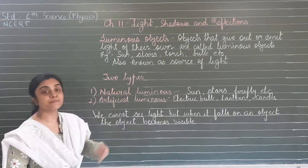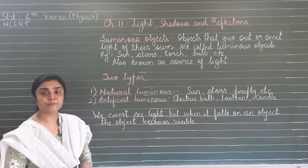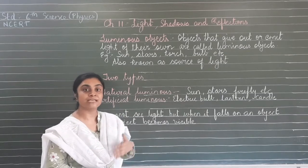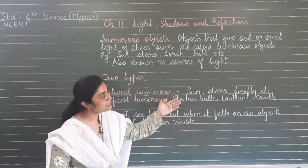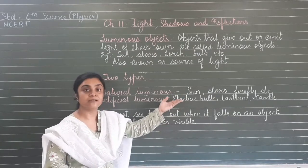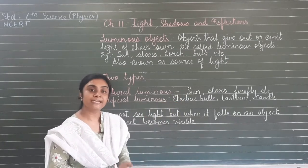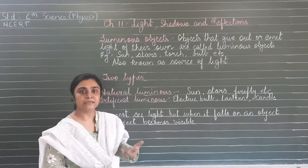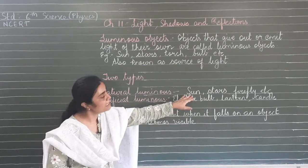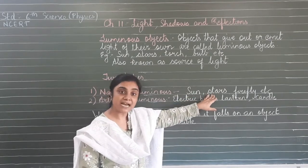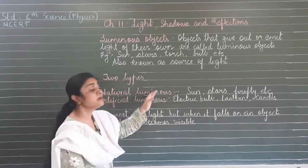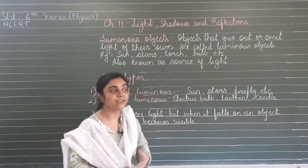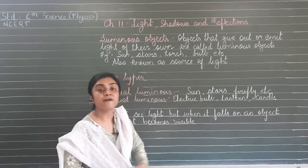There are two types of luminous objects: natural luminous objects and artificial luminous objects. Natural luminous means objects which emit light on their own - which produce light naturally. Examples are sun, stars, and firefly. The sun is the main source of light during daytime. Stars also emit their own light - they are also natural luminous objects. The firefly is an insect which emits light during nighttime.